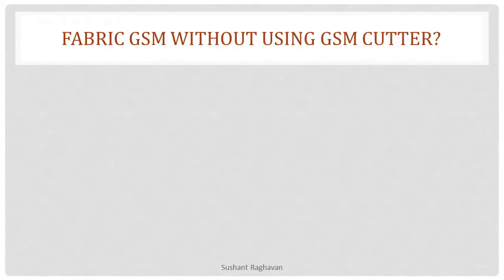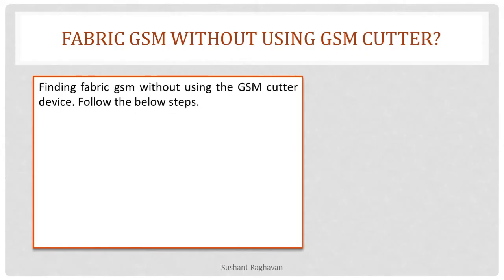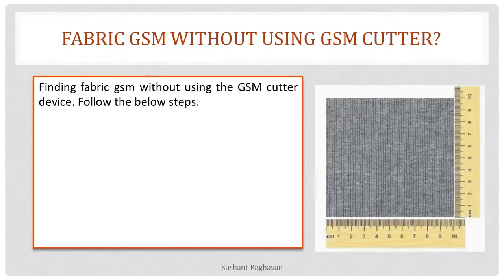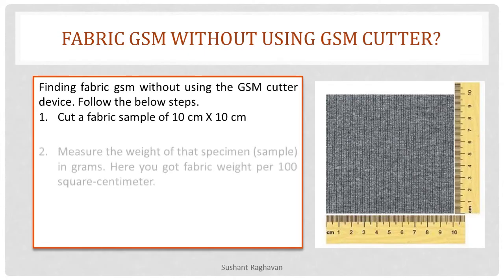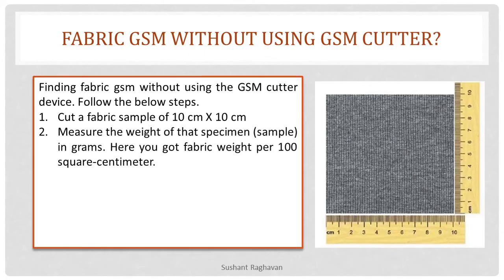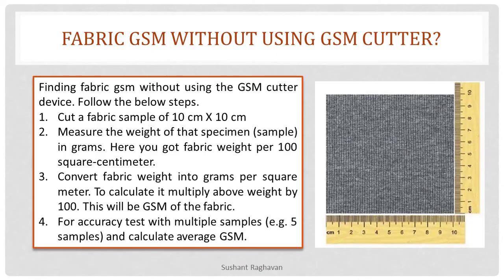Fabric GSM without using a GSM cutter. To find fabric GSM without using the GSM cutter device, follow these steps: cut a fabric sample of 10 cm × 10 cm, then measure the weight of this specimen sample in grams. Here you have the fabric weight in 100 square centimeters. Convert fabric weight into grams per square meter by multiplying the above weight by 100 — this will be the GSM of the fabric. For an accuracy test, use multiple samples; for example, 5 samples, and calculate the average GSM.